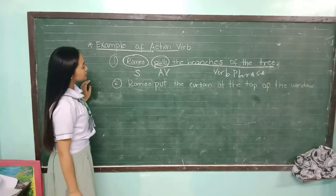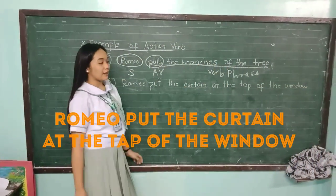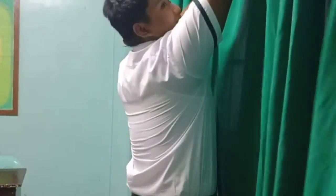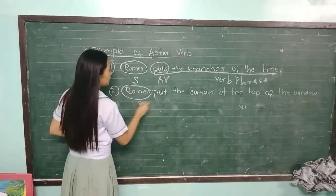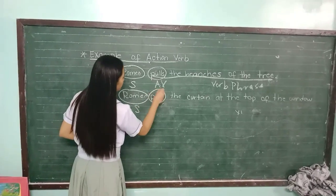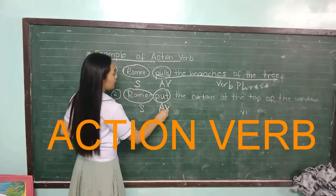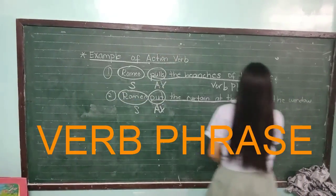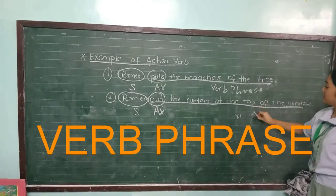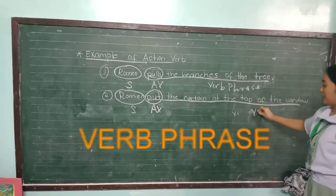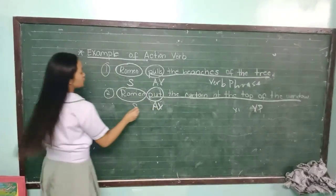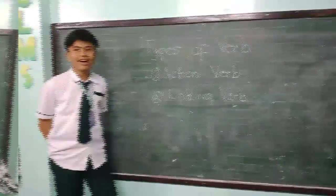For example, Romeo put the curtain at the top of the window. Put is the action verb, and put the curtain at the top of the window is also a verb phrase. Action verb shows Romeo's action.